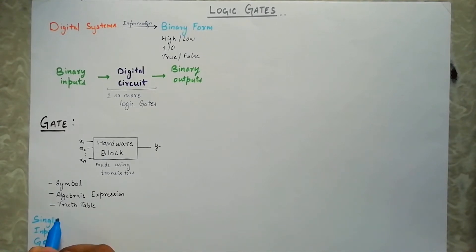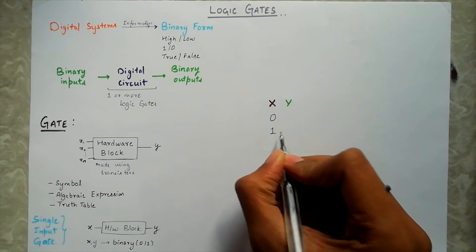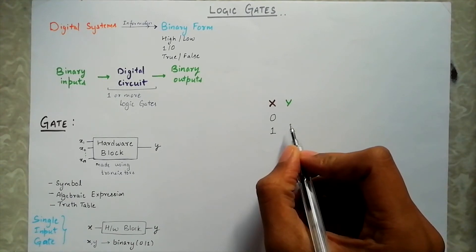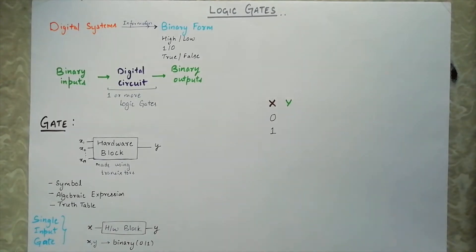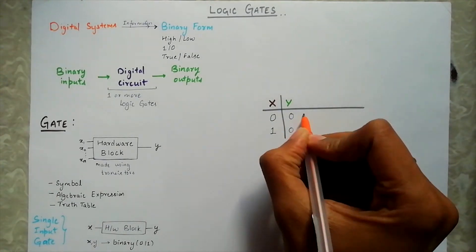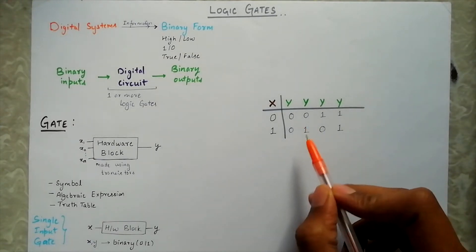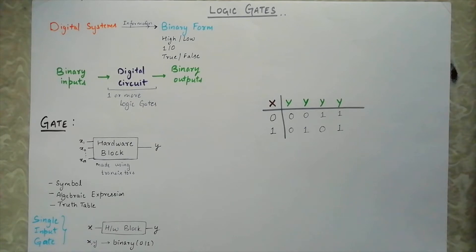So let's dive into the sea of gates. First we will look at the single input gates. So basically we have a hardware block with one input x and one output y. Just a reminder that x and y are both binary in nature. I mean they can either be 0 or 1. Now let's try to look at all the possible combinations of x and y. The input x can be either 0 or 1. And when x is 0, y can be either 0 or 1 as it is a binary variable. And similarly, when x is 1, y can either be 0 or 1. Let me write down all the unique possibilities of y. So we have 4 columns of y and y can be any one of these depending upon the hardware block we have for the single input digital circuit.